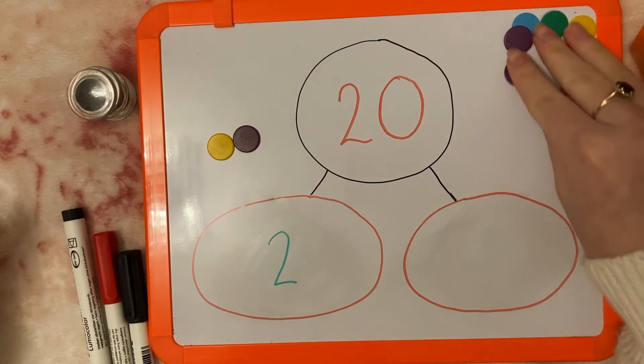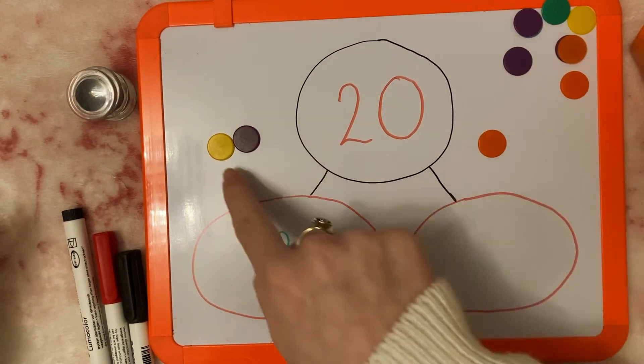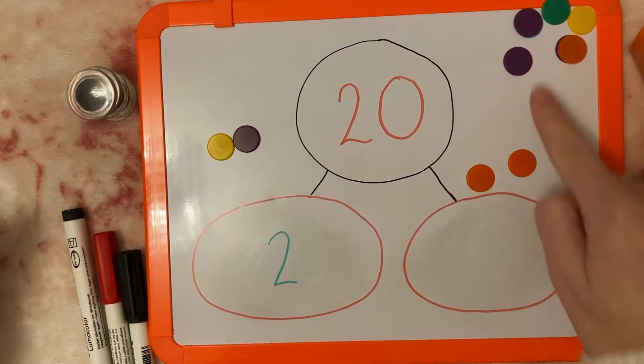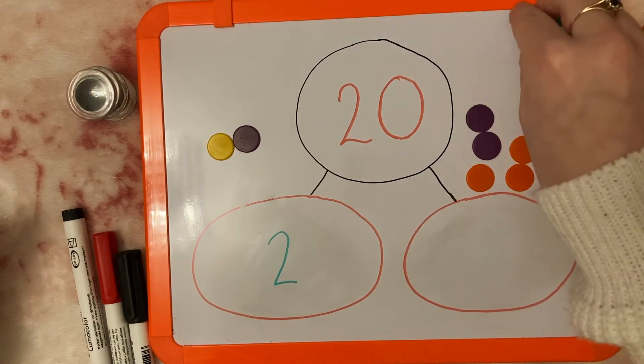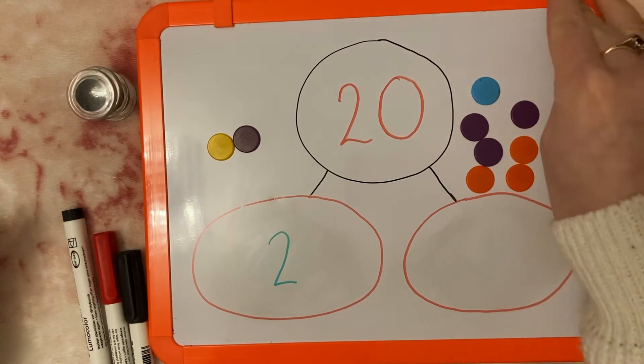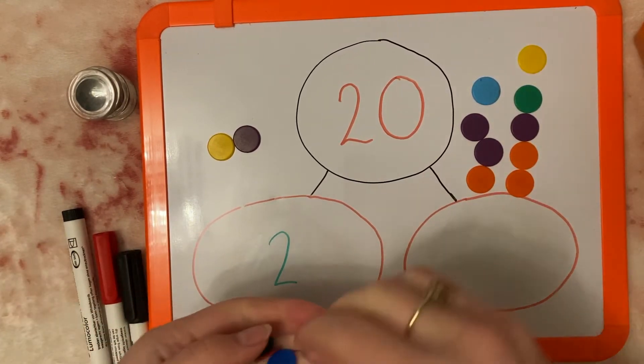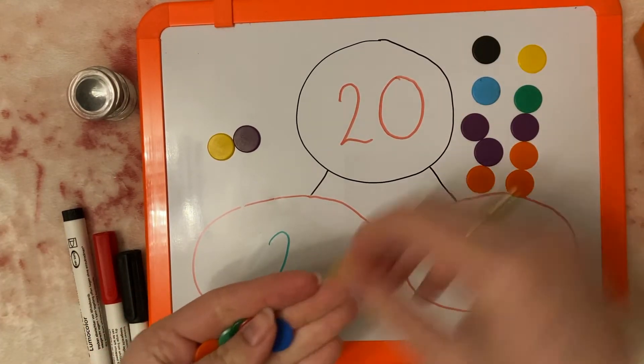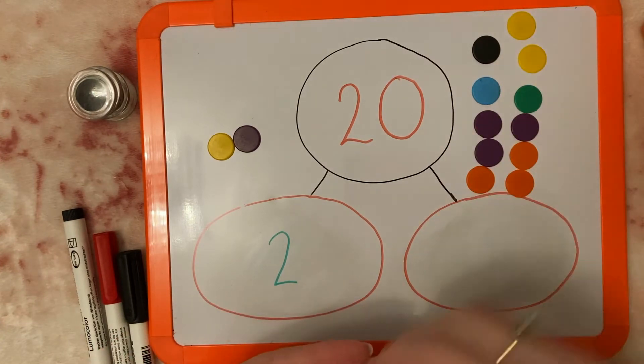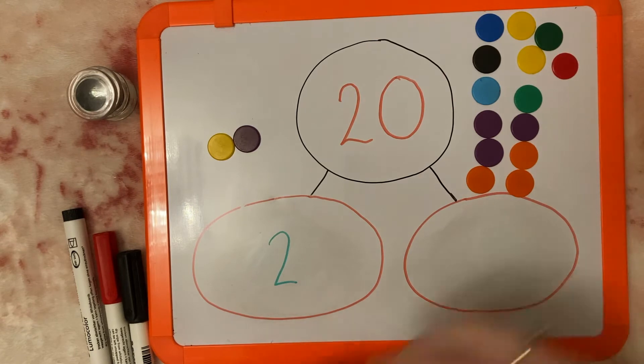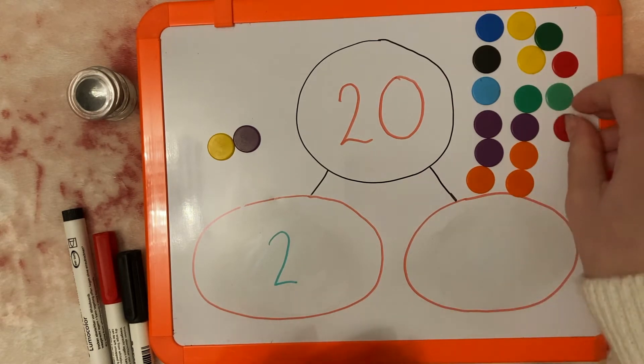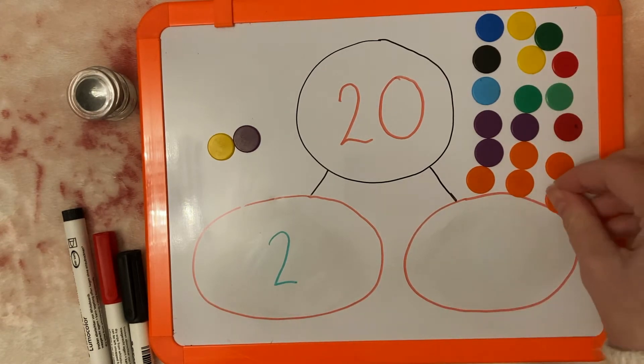So on this side I'm going to need 1, 2, 3, 4, 5, 6, 7, 8, 9, 10, 11, 12, 13, 14, 15, 16, 17, 18, 19, 20.